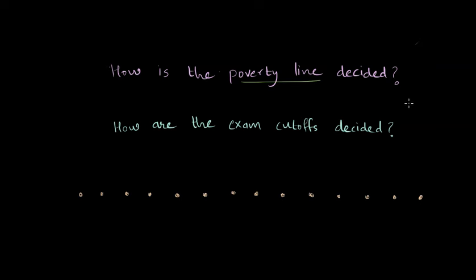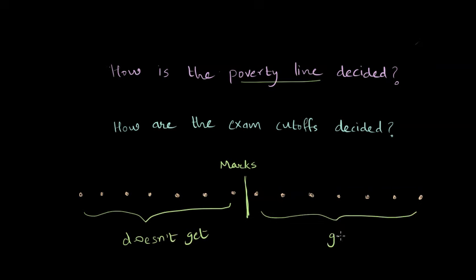Consider this data set that I've drawn here. Let's say this is some college and we have got so many applications and these dots are showing marks. The college wants to segregate and divide the data into two, so that a vertical line like this, everybody on the left of that line doesn't get the seat, and everybody above the line gets the seat or is considered for the next round.